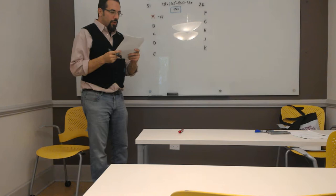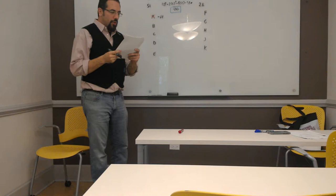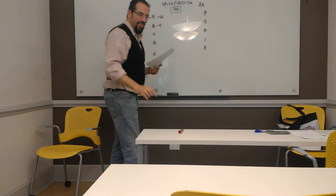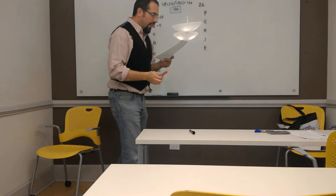Alyssa, if we plug in 2 for answer choice B, x minus 3 cubed plus x times x plus 2, what are we going to get? Negative 4. Negative 4. That's smaller than negative 60. Is that what we're looking for? No. Nope, so we can cross that out.